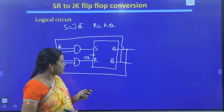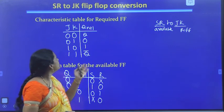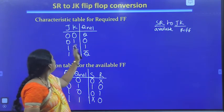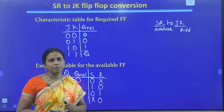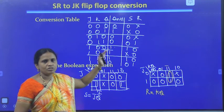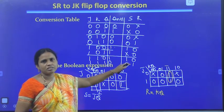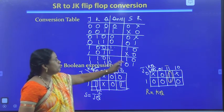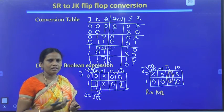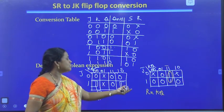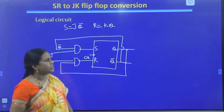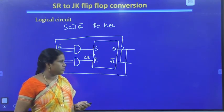To summarize the procedure: first identify the required and available flip-flops. Write the characteristic table for the required flip-flop, then the excitation table for the available flip-flop. Write the conversion table with required flip-flop inputs, present state, next state, and available flip-flop inputs derived from the excitation table. Take K-maps to get expressions, then draw the logical circuit. This completes the conversion from SR to JK flip-flop.